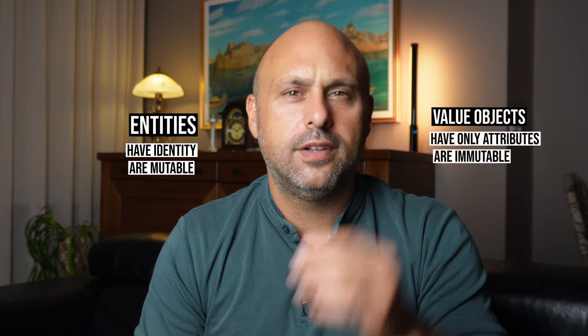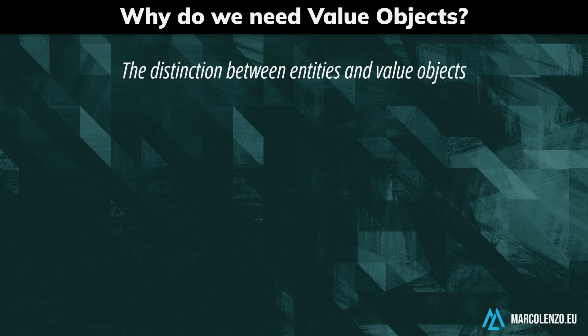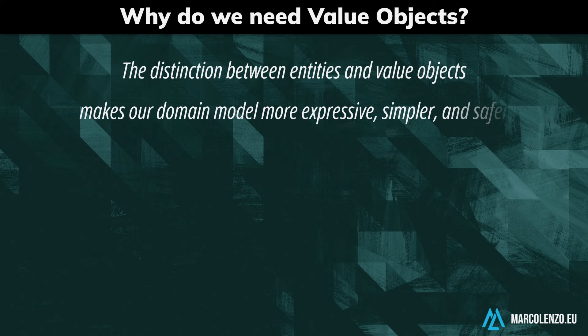Even though we've clarified the theoretical difference, it might still be unclear why this distinction exists and when to use each construct. The reason why we distinguish between entities and value objects is to make our domain model more expressive, simpler, and safer. Entities come with generic complexities — we need to define and create their unique identifiers, allow their state to be modified, while ensuring consistency with the business rules over their entire lifetime.